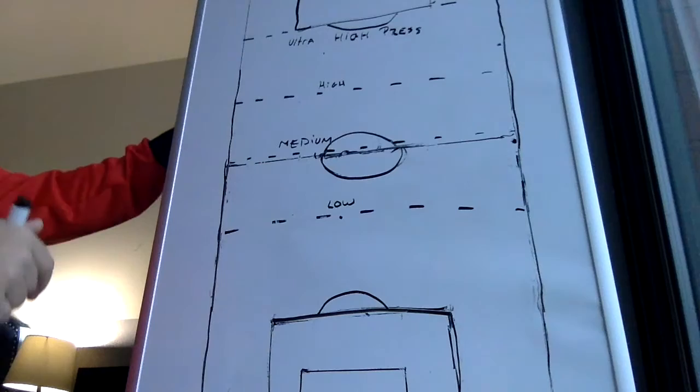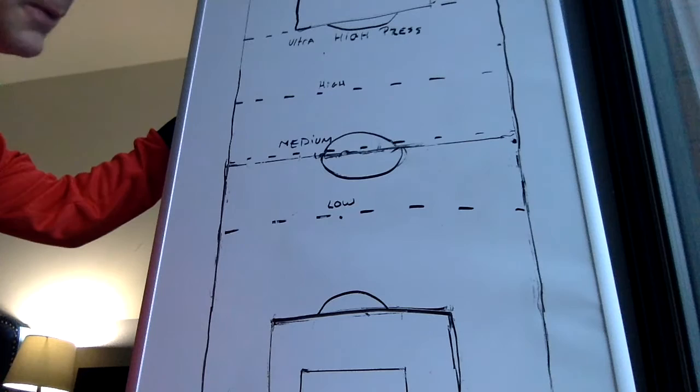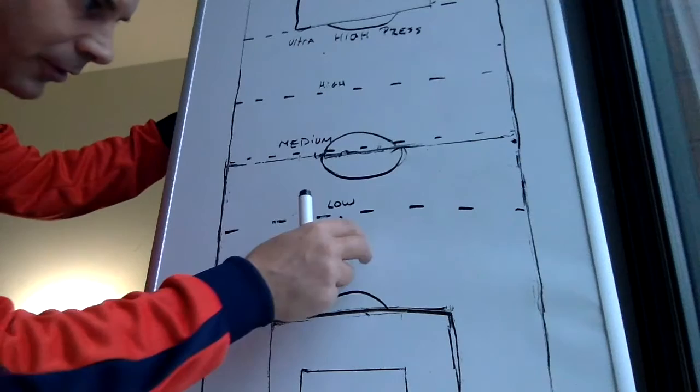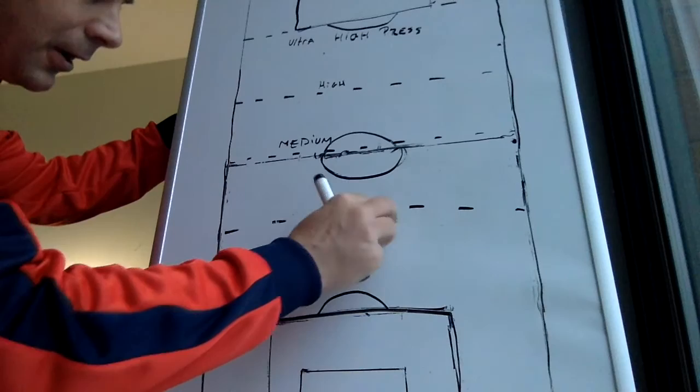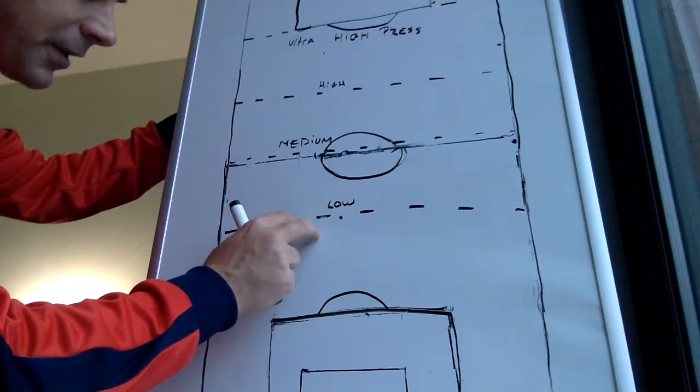So that's what we went over last time, but this video I'm going to use to explain how to pick a defensive game model. A defensive game model is you could sit low, and this would be a low block. If this was your line of confrontation right here, your team would be pretty much from here back. That's defensive organization.